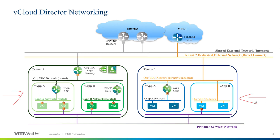There are two types of vApp networks. Direct: a vApp network is directly connected as a bridge to an external organization network. Or routed: a vApp network is private behind an edge gateway that performs network address translation. The edge gateway then connects the vApp network to an organization network, which in turn can be routed or directly connected to an external network.